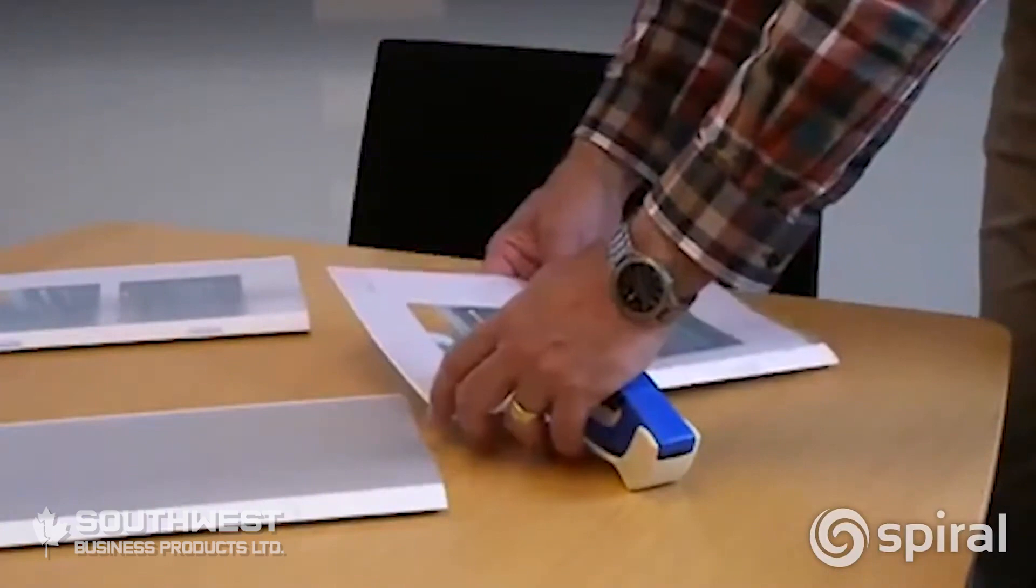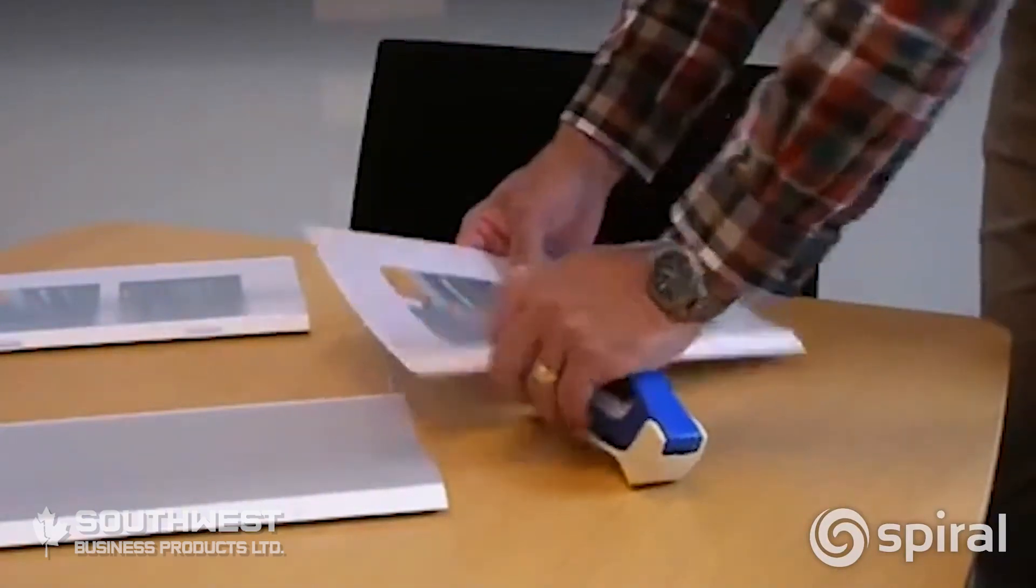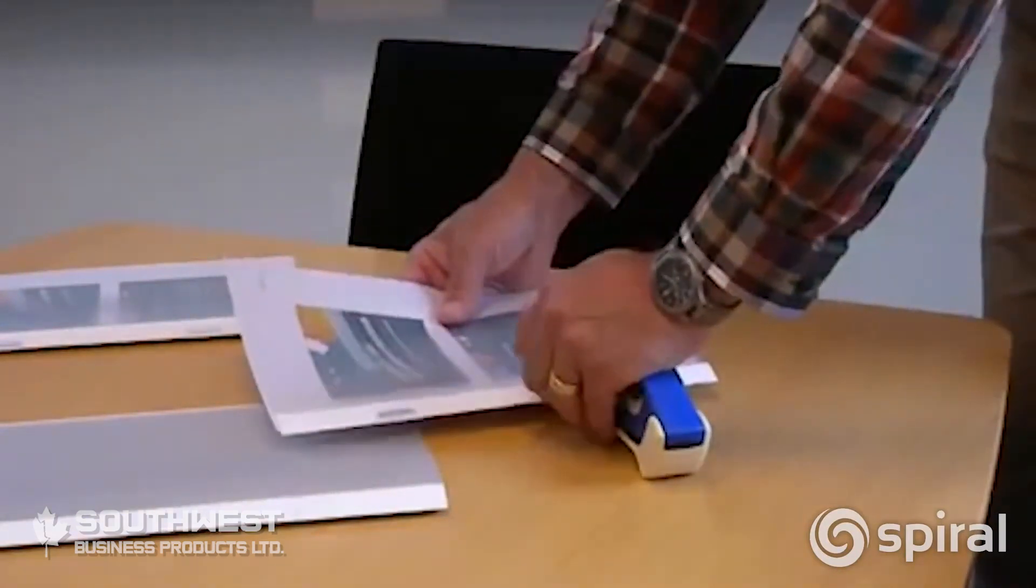The back and spine are made of a premium linen, and the front is made of a clear cover, so your first page will show through.